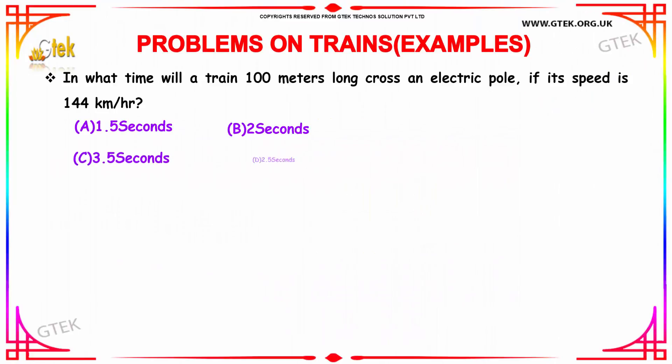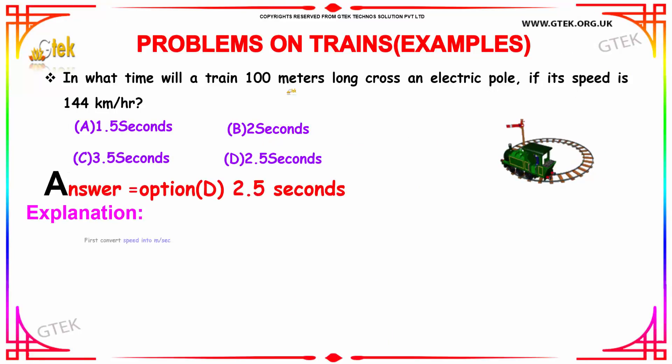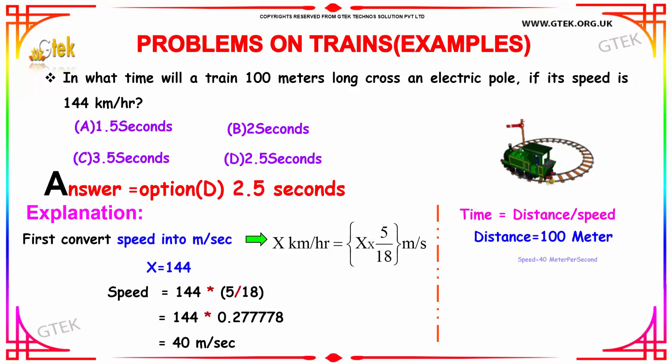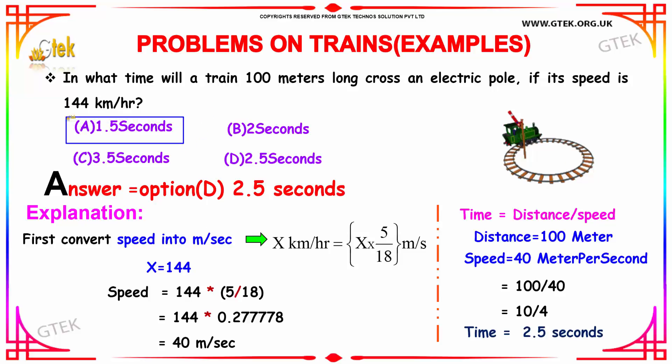Let's move on to the problem. In what time will a train 100 meters long cross an electric pole if its speed is 144 kilometers per hour? We are given three options and we need to identify the correct one. Now, here you can see the answer is in seconds and the speed is given in kilometers per hour and this one is in meters.